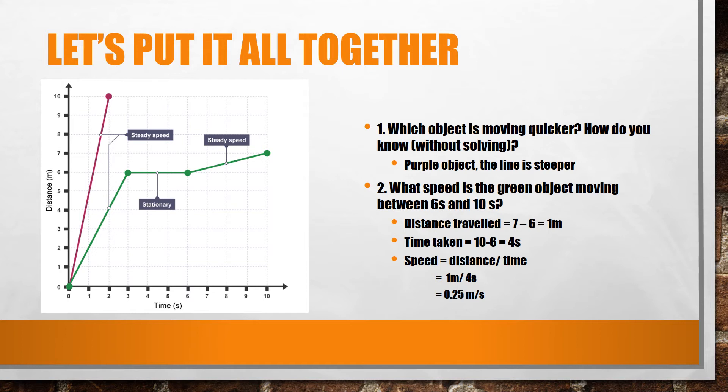What is the speed of the green object moving between 6 seconds and 10 seconds? This one is a little bit trickier, as we are only working with a small portion of the graph. Remember, to figure out speed, we need the distance and the time. To figure out the distance, we take the difference between where the object was at 6 seconds and where it was at 10. At 10 seconds, the object is at 7 meters, and at 6 seconds, it's at 6 meters. That means we can get our distance by taking away 6 from 7. That gives us 1 meter.